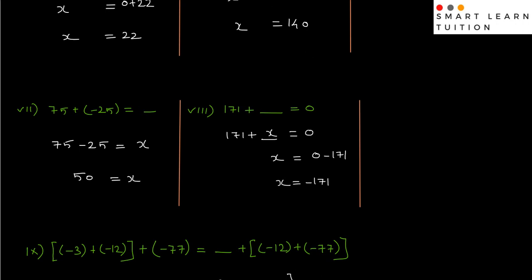Hi, welcome to SmartLawn. This is question number 1 and exercise 1.1. Question number 1, 7th sum. So 75 plus minus 25 equals to dash.